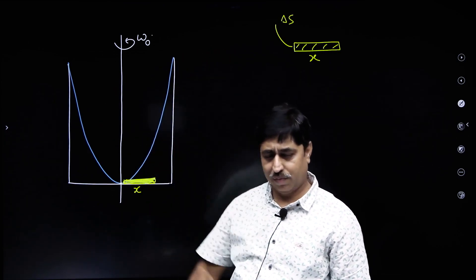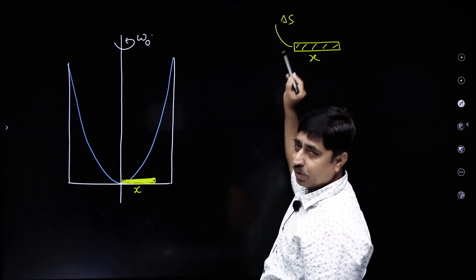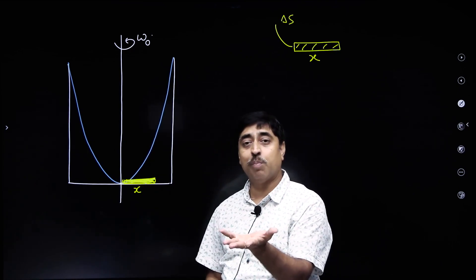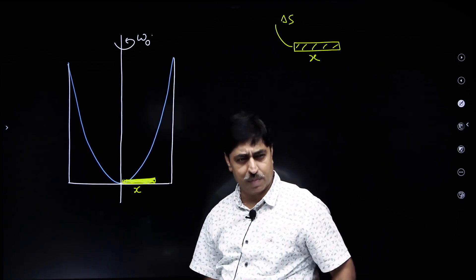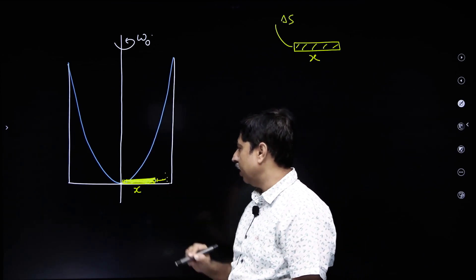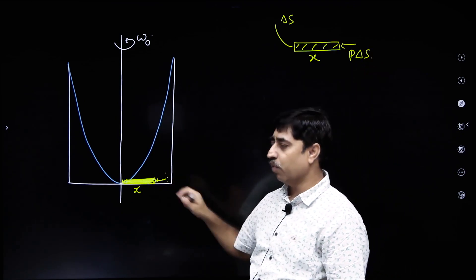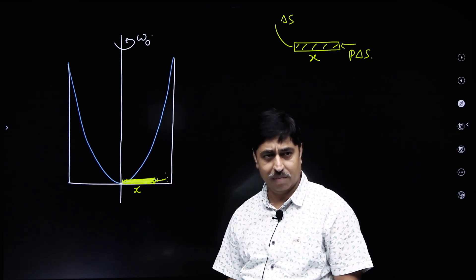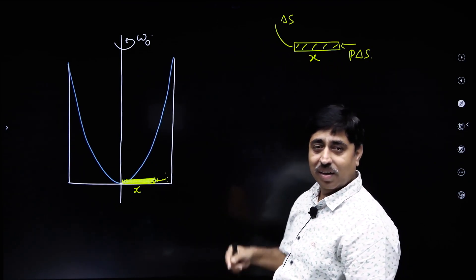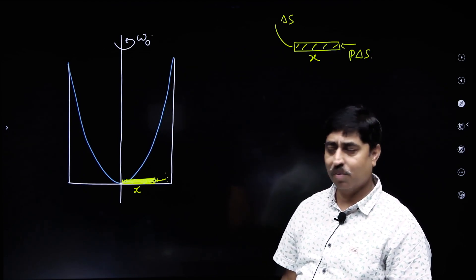For simplicity, I am ignoring atmospheric pressure — even if you consider it, it will cancel out from both sides. So I am assuming there is no atmosphere. On the inner side there is no pressure because there is no liquid there. But on the outer side there is liquid, which will exert a force equal to pressure times delta s. If p is the pressure at that point, then the net radial force acting on this cylinder of liquid is p·delta_s.